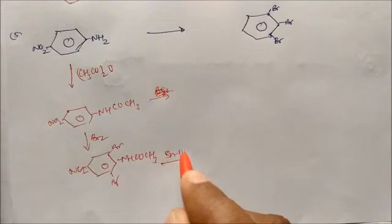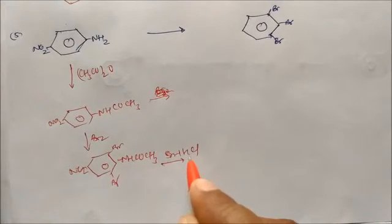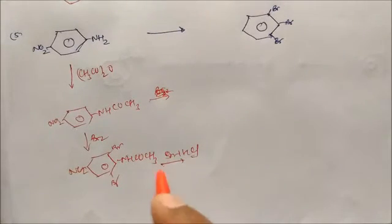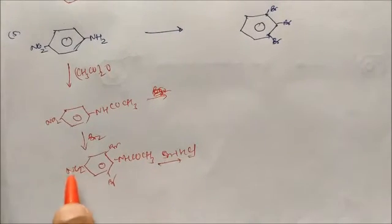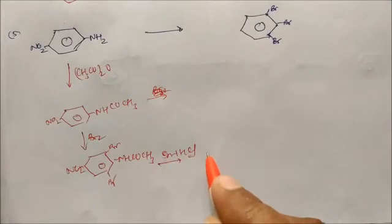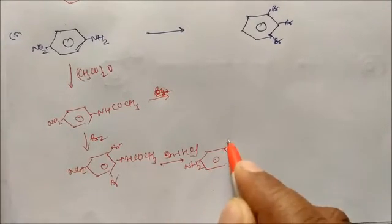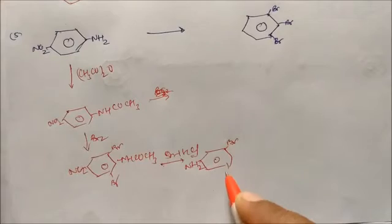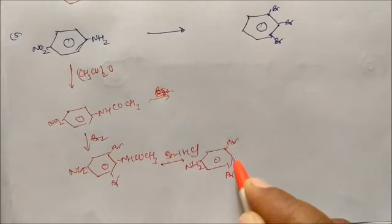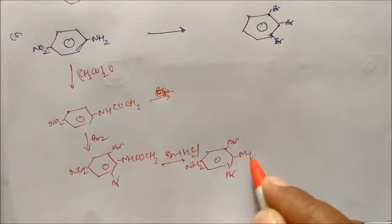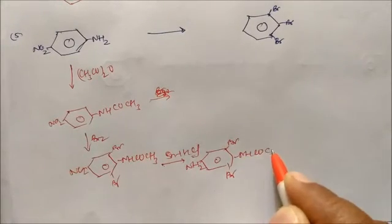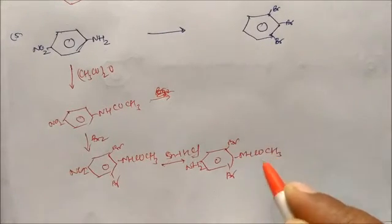Use tin plus HCl — this will reduce NO2 into NH2 (aniline). So you get a product with NH2, two Br groups, and the NHCOCH3 group still present.